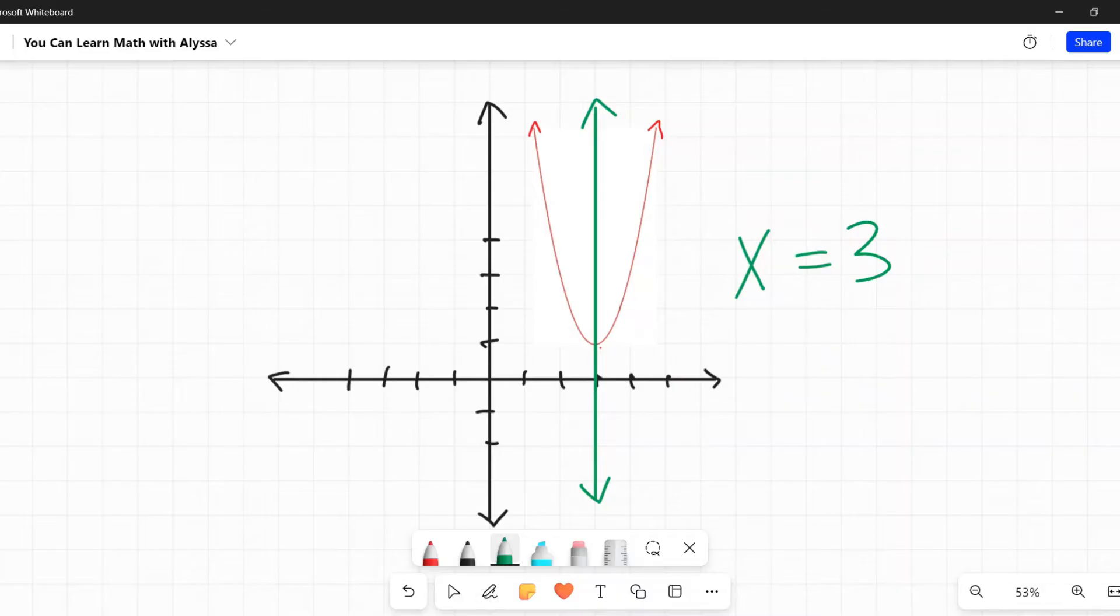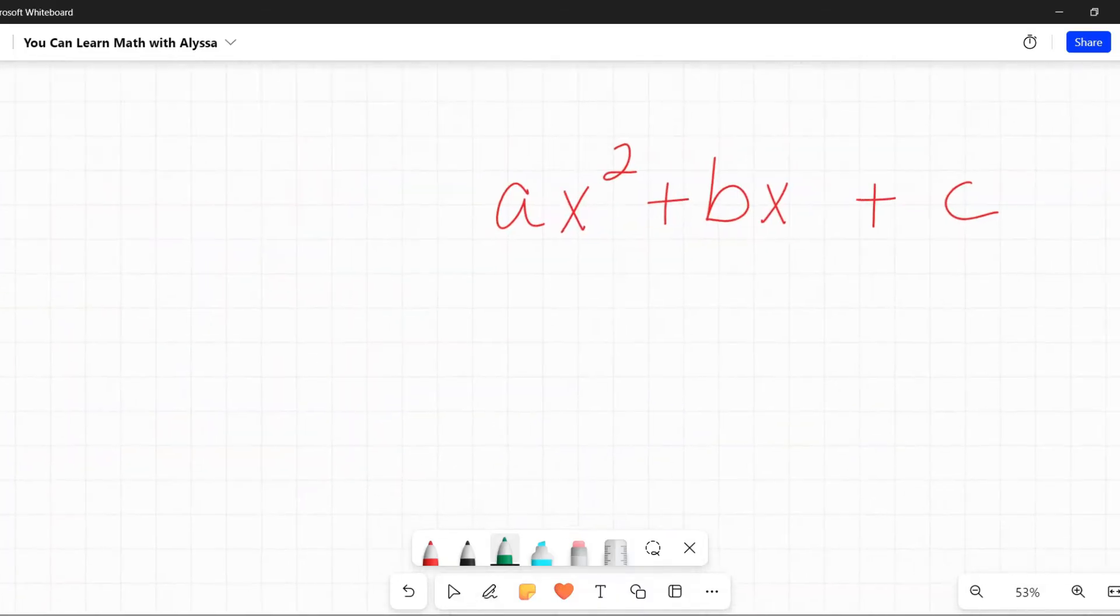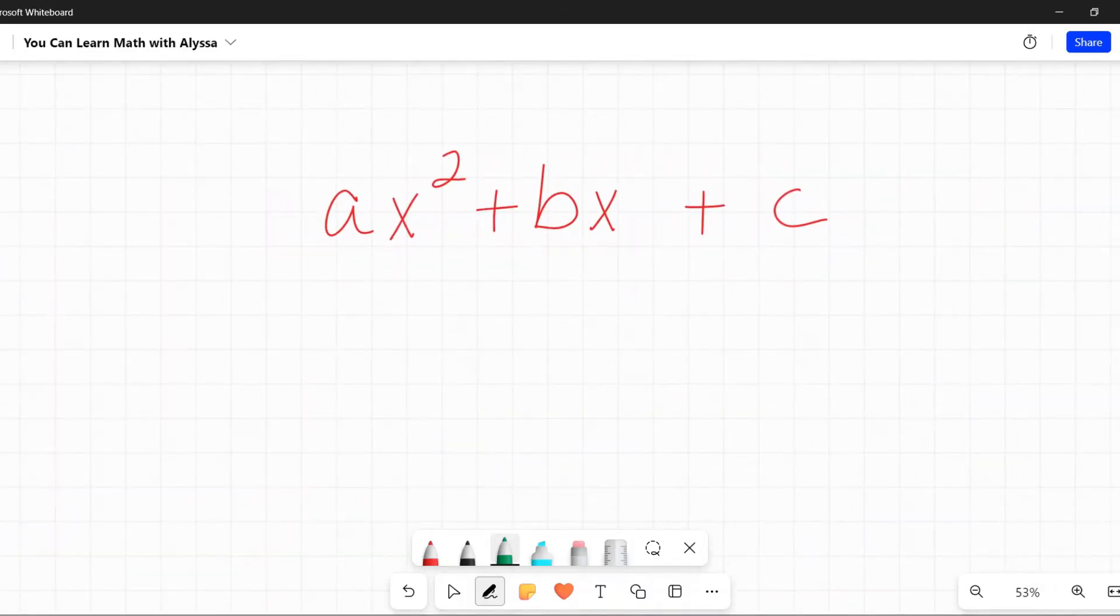When we're talking about a parabola, a parabola can be represented as ax squared plus bx plus c, where a, b, and c are all numbers. For example, in the quadratic 5x squared minus 2x plus 4, my a would be 5, my b would be negative 2, and my c would be 4.